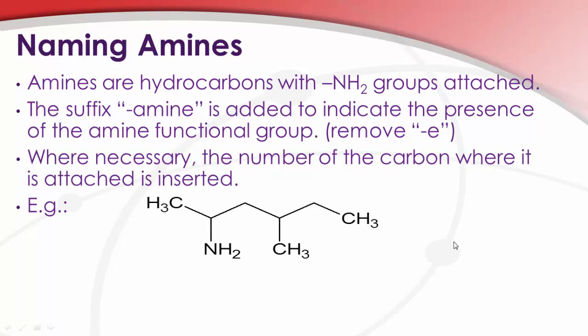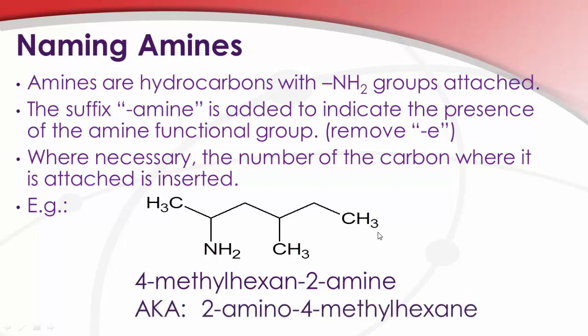Okay, so we have the option to name this in one of two ways. First off, we need the longest chain, two, four, six. So this is hexane. And we can say, okay, well, there's a 2-amine here and a 4-methyl here. We also could name this 2-amino-4-methyl hexane. In other words, naming it as the derivative of the longest chain exclusively. It's more typical to name this with the amine as a suffix.